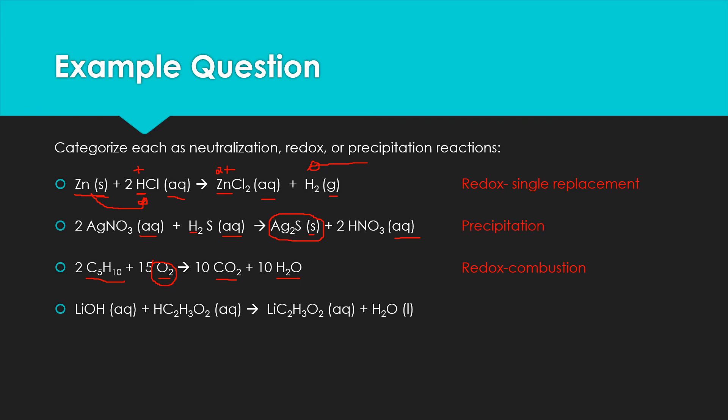For the last example, we have lithium hydroxide — that OH base, aqueous — and a hydrogen in front for the acid, which is also aqueous. We're creating water, so we're neutralizing our substances. Then we have lithium acetate, which is a salt — an ionic compound with positive and negative ions. This is our classic acid-base reaction: acid plus base, hydrogen and hydroxide make water, and we get our salt left over. That's how we can recognize our different types of reactions; we'll go more in depth on redox and acid-base in the next two sections.